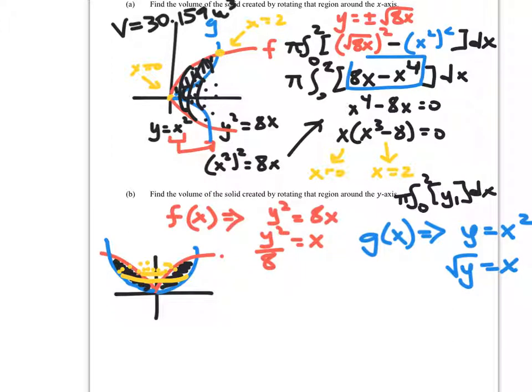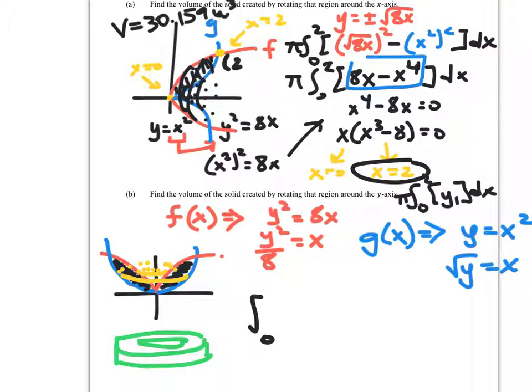Alright, so now you can imagine that I'm revolving this around the y-axis. Therefore, any one of my disks here would look like this. Okay, so big R in this case, we're going to flip them. Big R is going to be g, and little r is going to be f. So I'm going to take the integral from 0 now to the y value, right? I knew the x value before was 2, but I knew the y value. So that point there is 2, 4. So I'm going to integrate from 0 to 4.